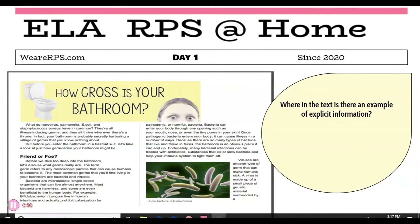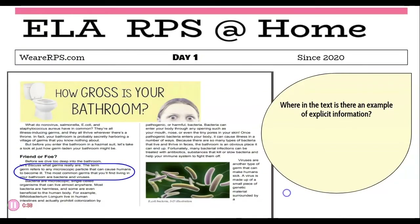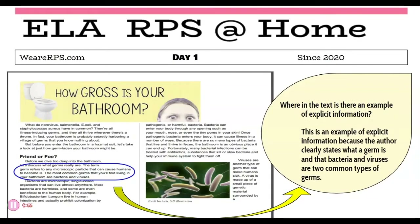So what did you guys find? If you found this sentence: 'The term germ refers to any microscopic particle that can cause humans to become ill, and the most common germs that you'll find living in your bathroom are bacteria and viruses' — then you are correct. This is explicit information because the author clearly states what a germ is and tells you that bacteria and viruses are two common types of germs.